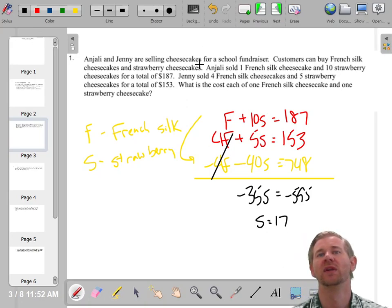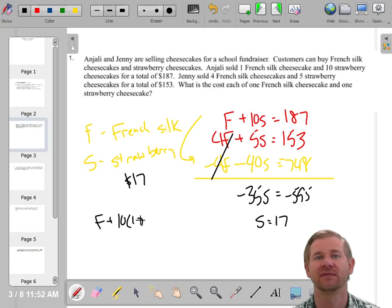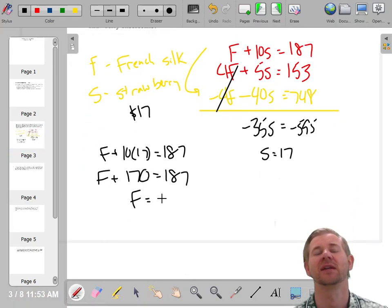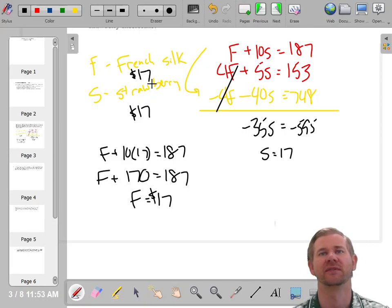So what's that mean? What is the cost of each? Well, it must mean that S costs $17. A strawberry cheesecake is $17. Now I can go back to either equation and I can solve for F. So I'll use the top one, 10 times 17 equals 187 and 10 times 17 is 170. And then when I subtract 170 on both sides, 187 minus 170, I get 17 there as well. So they're both $17.